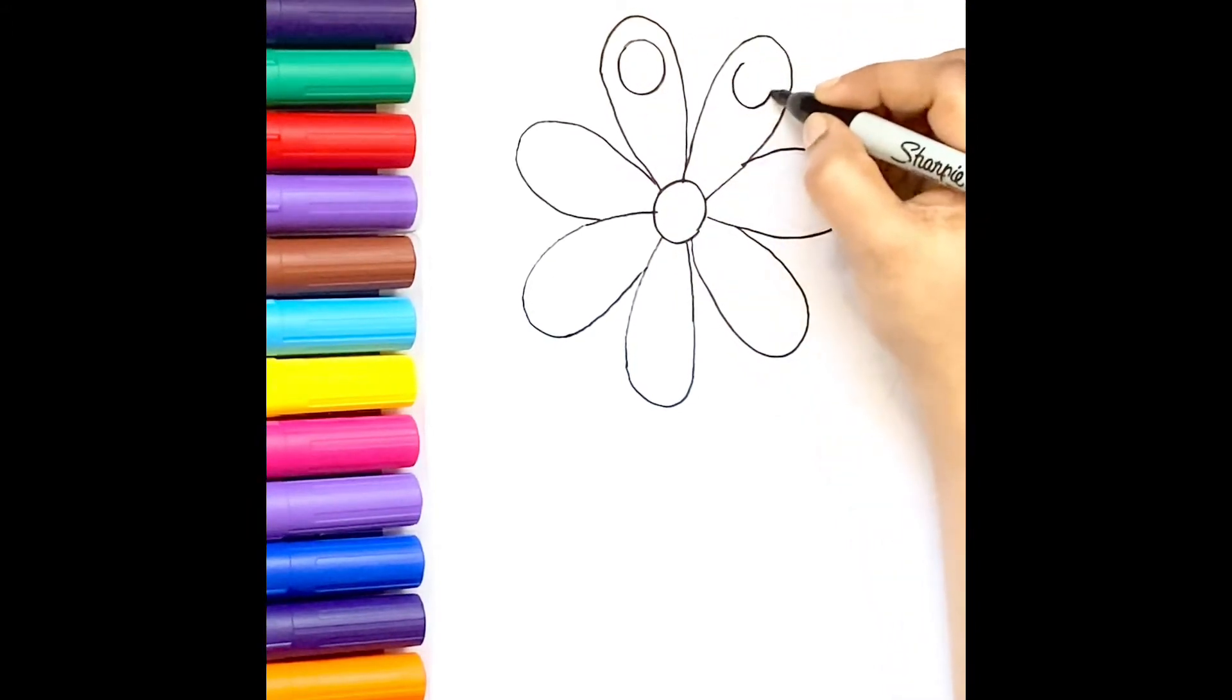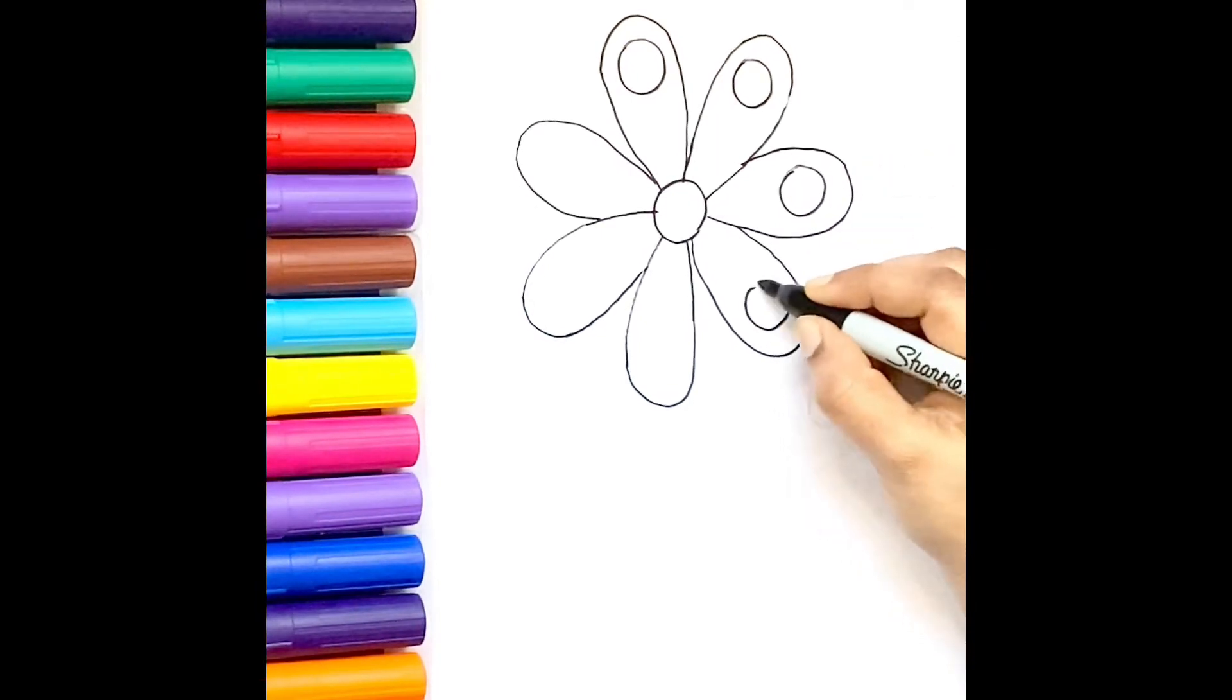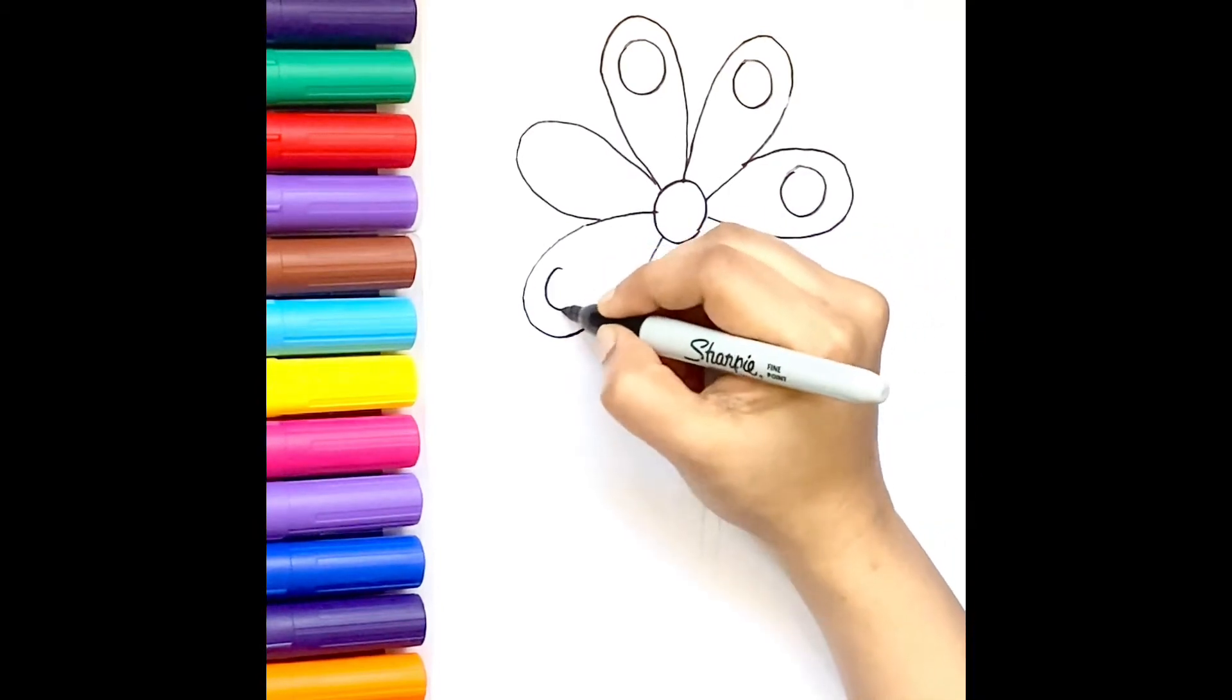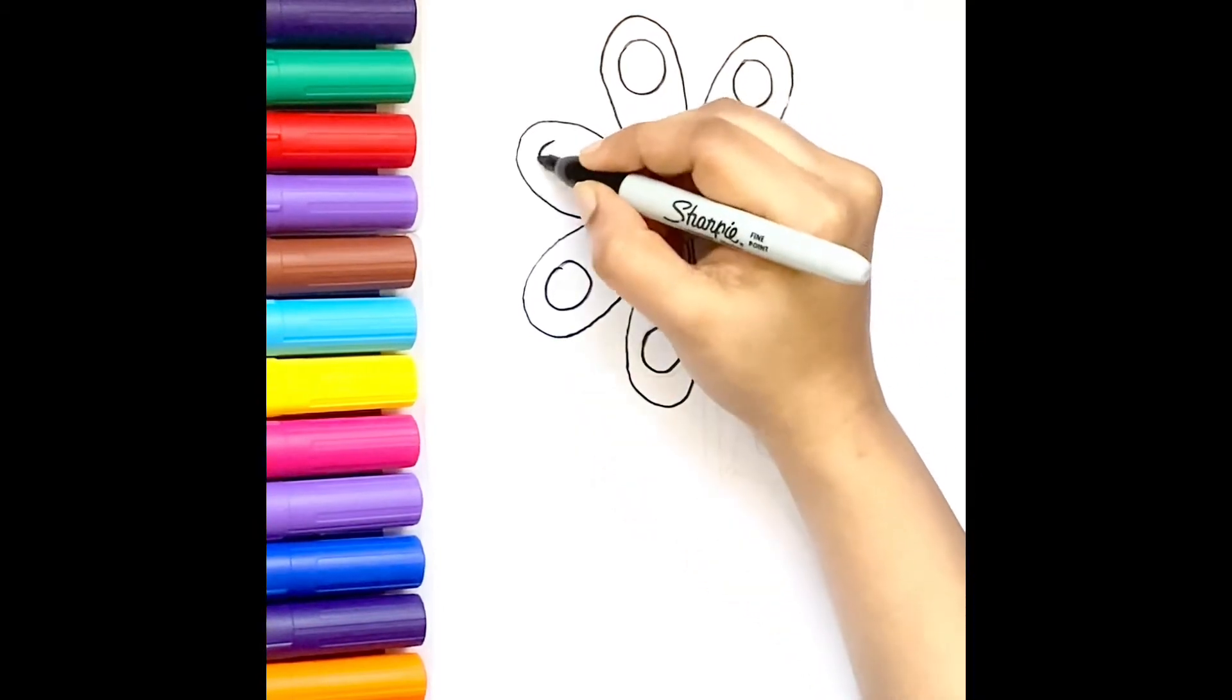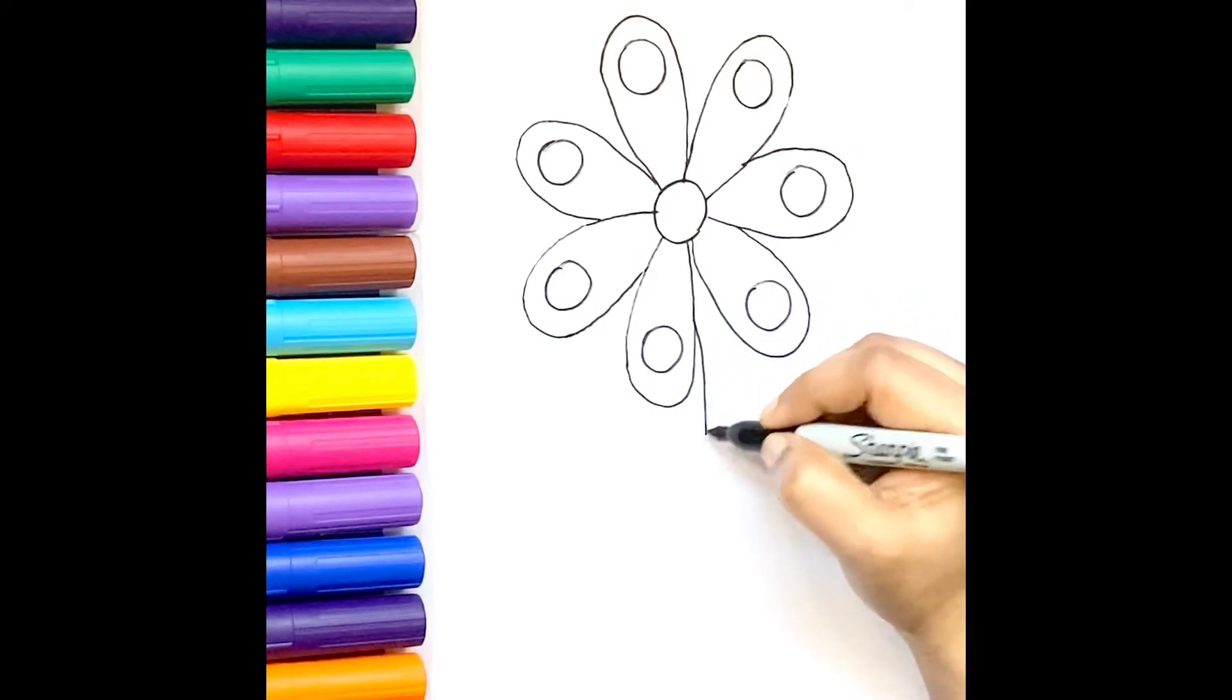Now draw a circle inside each oval. Now draw two straight curves parallelly.